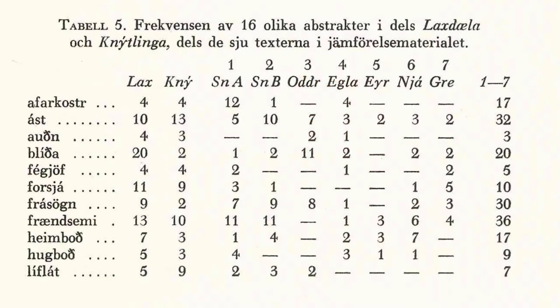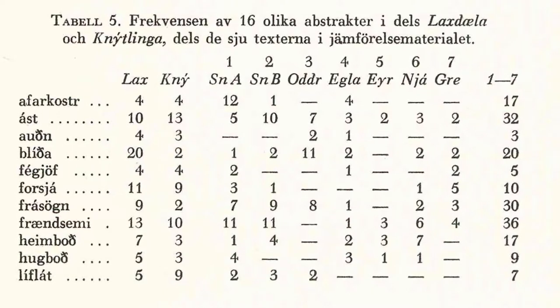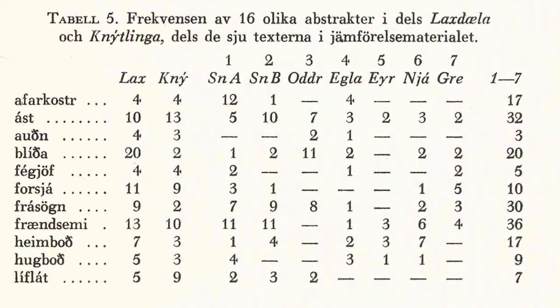What he did was compare Heimskringla to the five big sagas of Icelanders: Njáls saga, Eirbyggja saga, Laxdæla saga, Grettis saga, and Egils saga. He operated on the assumption that Heimskringla was certainly a work by Snorri Sturluson, and he wanted to measure the stylistic affinity between Heimskringla and those five sagas. He developed a method called the pair word method — a pair word being a word found in Heimskringla and in one of the five big sagas of Icelanders, but not the others.